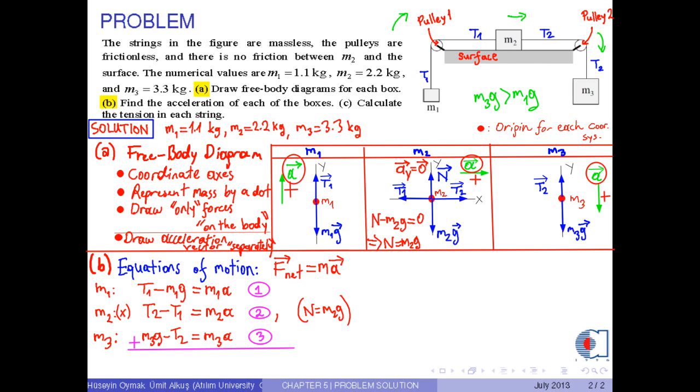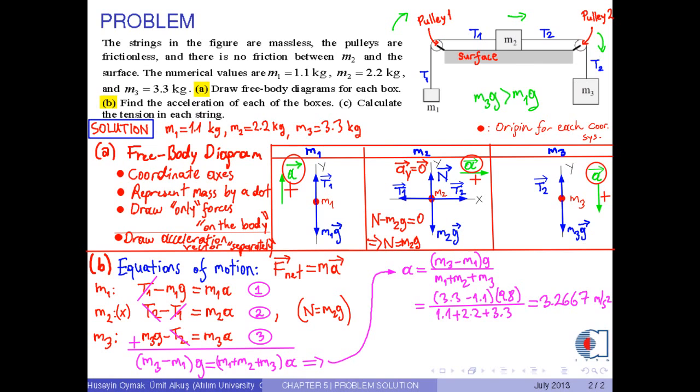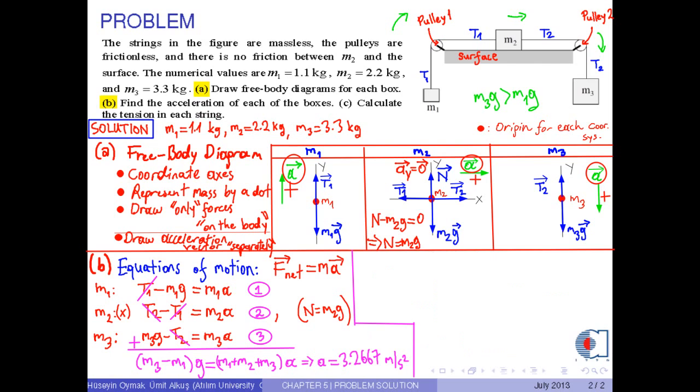After that, if we add these equations up side by side, we obtain M3 minus M1 times G equals M1 plus M2 plus M3 times A. From this equation, we get an expression for acceleration. With the corresponding numerical values, we obtain 3.2667 meters per second squared, or in three significant figures, it is approximately 3.27 meters per second squared. And this is the solution for part B.